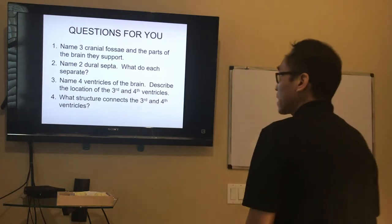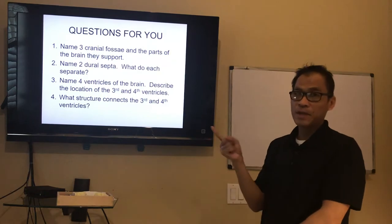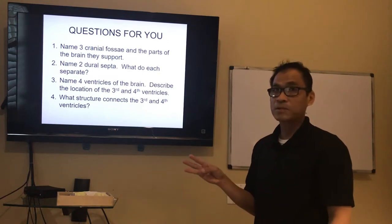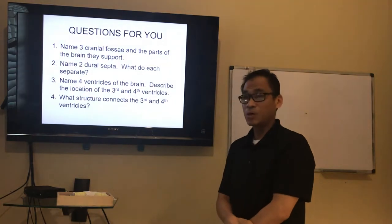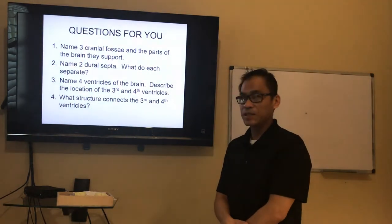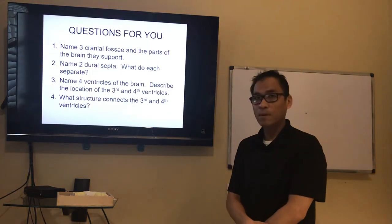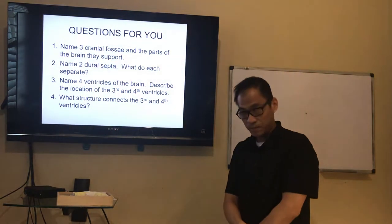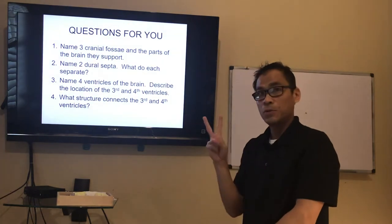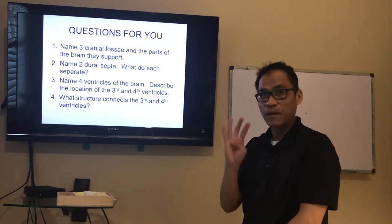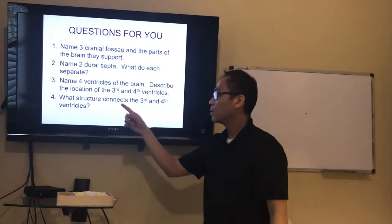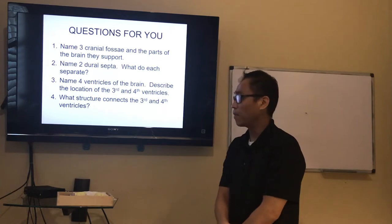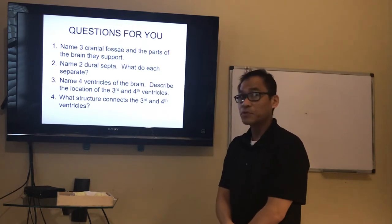Review: the three cranial fossae — anterior supports frontal lobes, middle supports temporal lobes, posterior supports cerebellum. The two dural septa: the falx and the tentorium. The falx cerebri separates left and right cerebral hemispheres; the tentorium cerebelli separates the cerebrum above from the cerebellum below. The four ventricles: two lateral ventricles, third ventricle, fourth ventricle. The third ventricle is between the thalami; the fourth ventricle is between pons and cerebellum. The cerebral aqueduct connects the third and fourth ventricles.